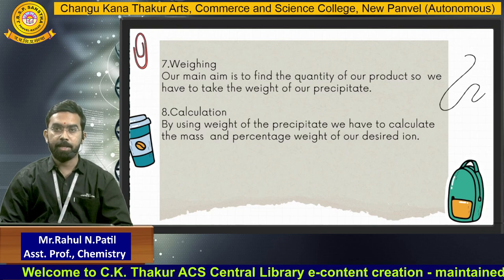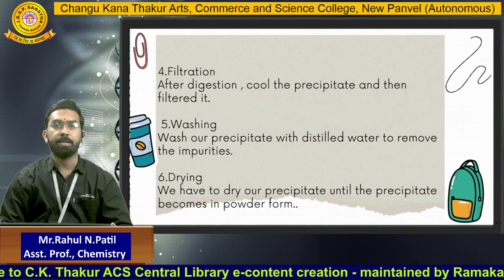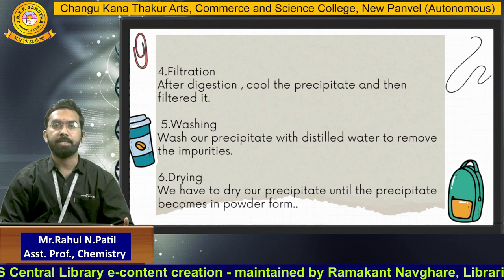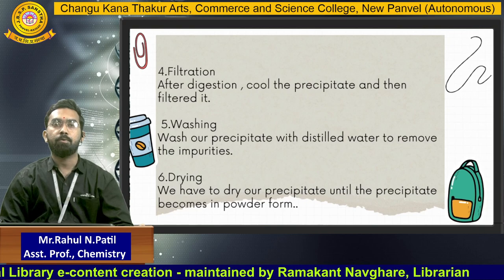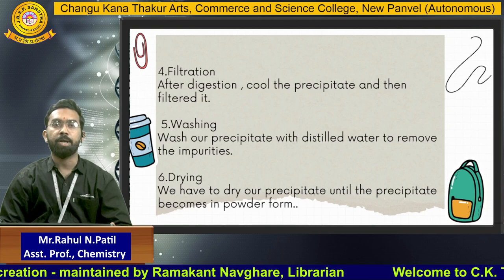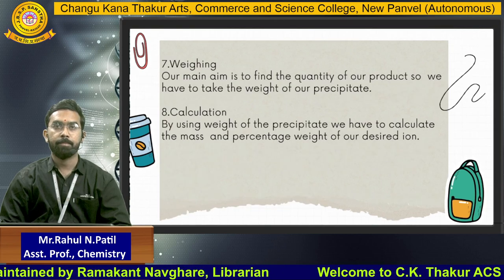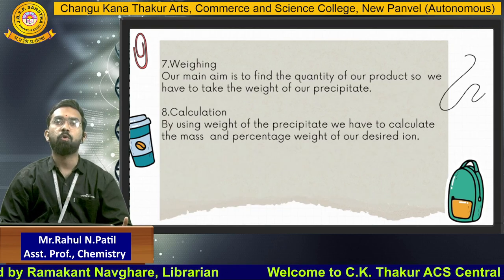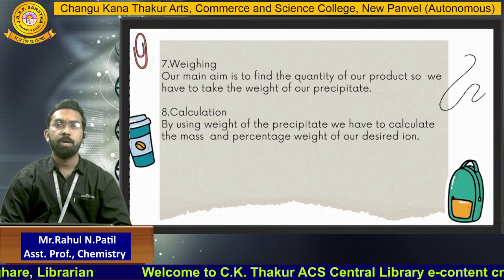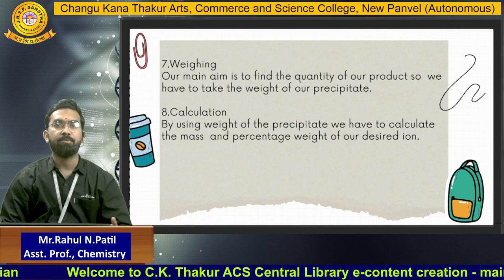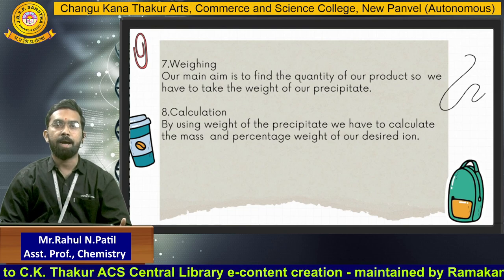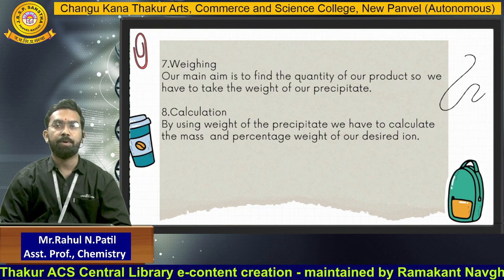Step six is drying: after washing, the collected yield on the filter paper is placed in an electric oven to dry. Step seven is weighing: after drying, note the weight of the product using a weighing balance to determine how much yield was obtained. Finally, step eight is calculation: using the weight of the precipitate, calculate the mass and percentage weight of the desired ion.